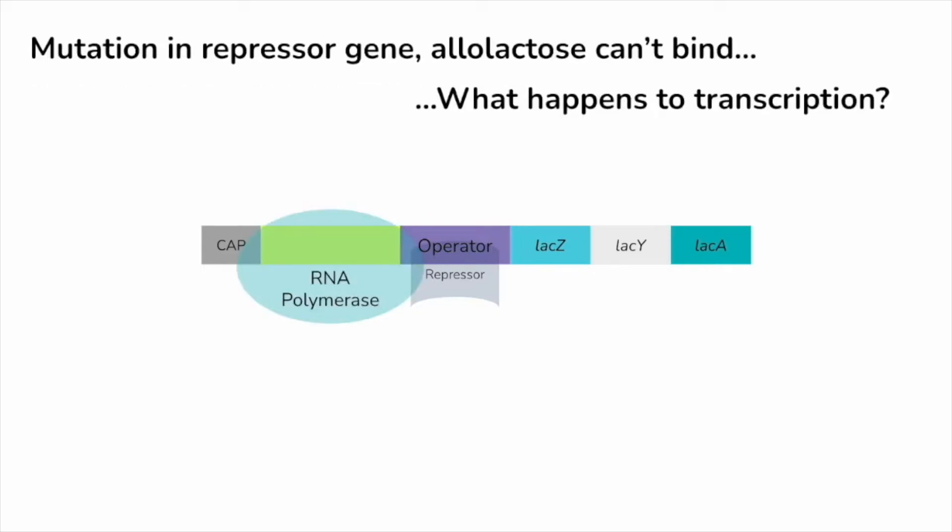So let's apply this. Let's say there's a mutation in the gene that codes for our repressor protein. Remember, the repressor is a protein itself as well. And in that mutation, allolactose can no longer bind to the repressor. What happens to our transcription? Well, if allolactose can't bind to the repressor anymore, that means the repressor stays on the operator because the repressor will not be removed unless allolactose binds to it. When allolactose can no longer bind to the repressor and the repressor stays on the operator, RNA polymerase can no longer move down the operon and transcribe the genes to generate these proteins. So we have low or no levels of transcription.